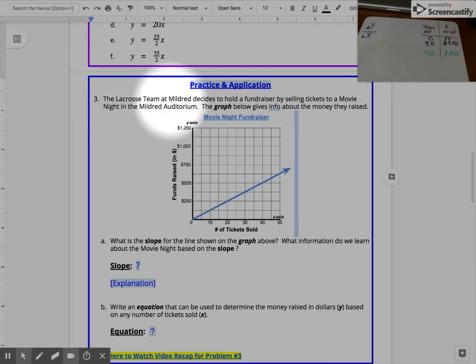Problem number three tells us that the lacrosse team decides to hold a fundraiser by selling tickets to a movie night in the Mildred Auditorium. They give us a graph to provide info about the money. The y-axis for this graph tells us how much money they're going to raise in funds, and the x-axis running side to side tells us how many tickets they sold.